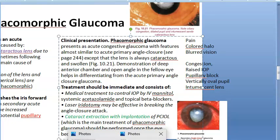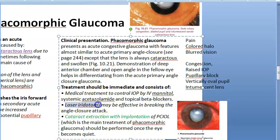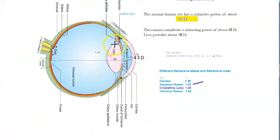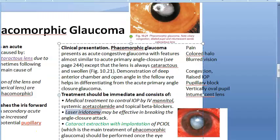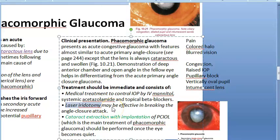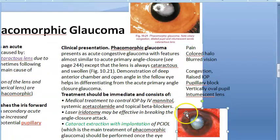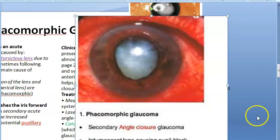Treatment: standard glaucoma treatment including IV mannitol and acetazolamide for angle closure, topical beta blockers, and laser iridotomy — where a hole is made in the iris so aqueous humor can drain, bypassing the pupil. Since the lens is anyways cataractous, cataract lens extraction with implantation of a PCIOL is performed. That is phacomorphic glaucoma — a secondary angle-closure glaucoma.